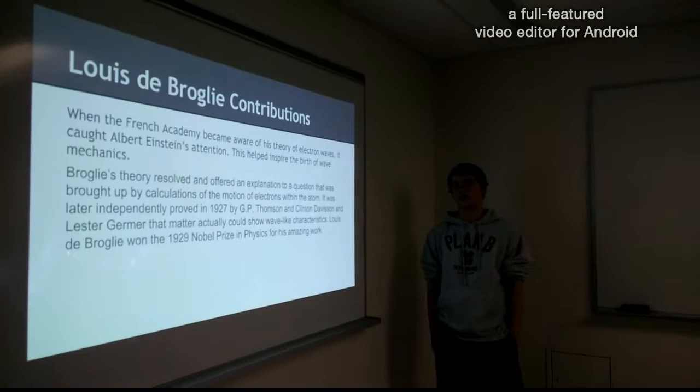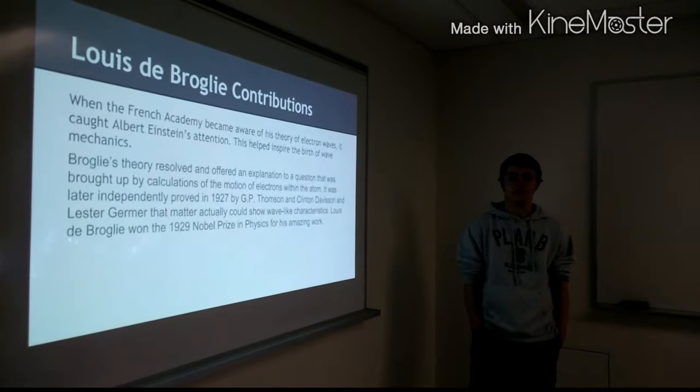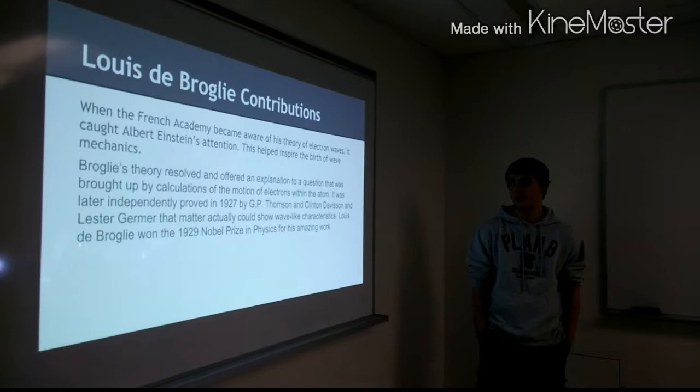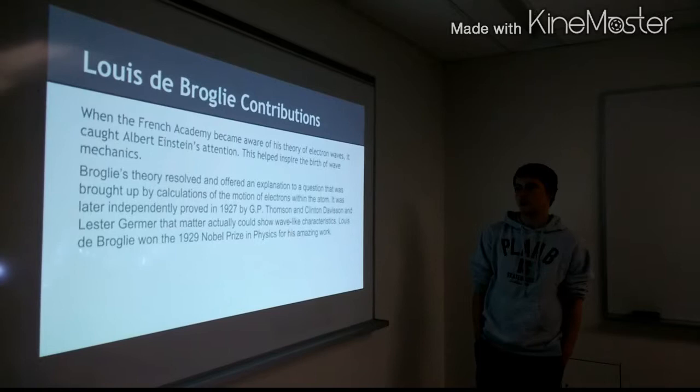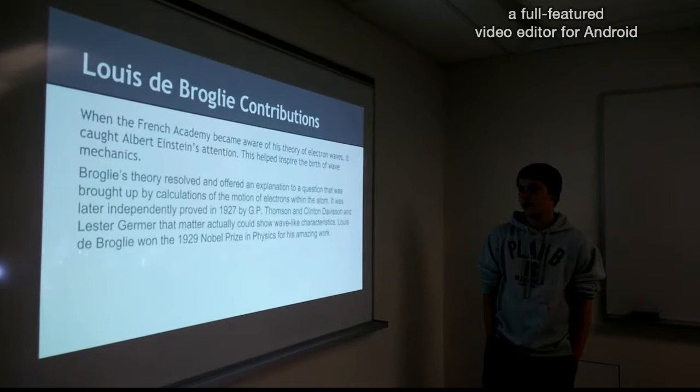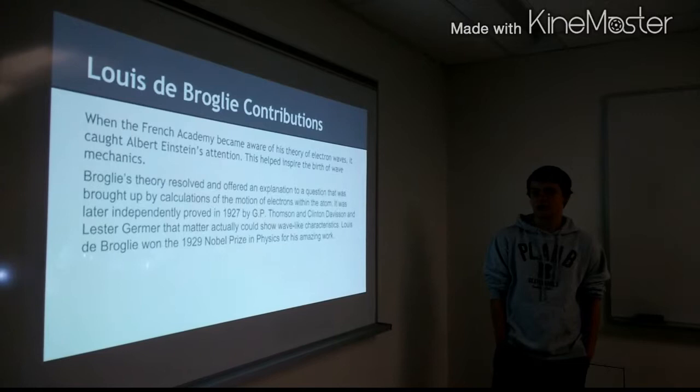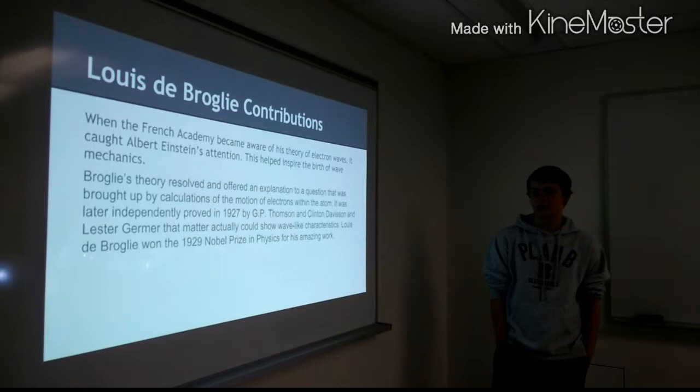De Broglie made some important contributions during his research. One thing is when the French Academy became aware of his theory of electron waves, it caught Albert Einstein's attention, and this kind of helped inspire the birth of wave mechanics. And another thing is how De Broglie's theory resolved and offered an explanation to a question that was brought up by calculations of the motion of electrons within the atom. It was later independently proven in 1927 by G.P. Thompson and Clinton Davison and Lester Germer. That matter actually could show wave-like characteristics. De Broglie won the 1929 Nobel Prize in Physics for his amazing work.